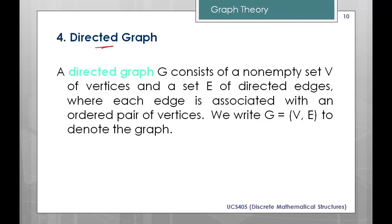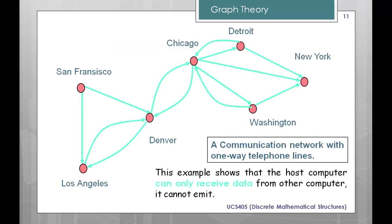The fourth type is a directed graph. The meaning of a directed graph is that there is a direction from one node to the next node. From one node to the second node there is a direction. Similarly, there is a direction from one city to Los Angeles and from Los Angeles to Denver. A communication network with one-way telephone lines — only a one-way link — means whichever link is sending data is only for sending, and whichever link is receiving data is only for receiving.